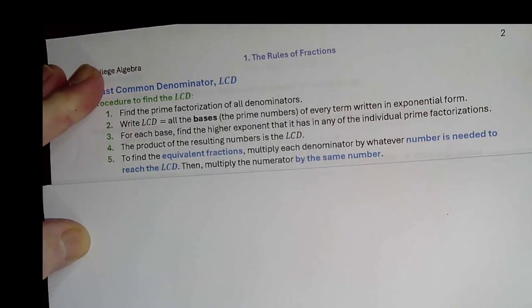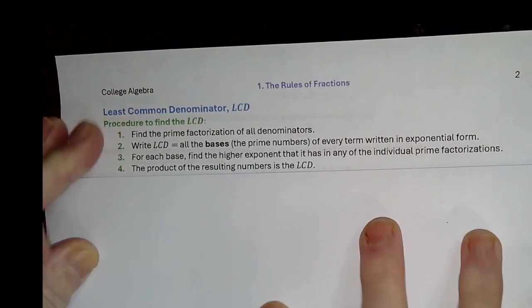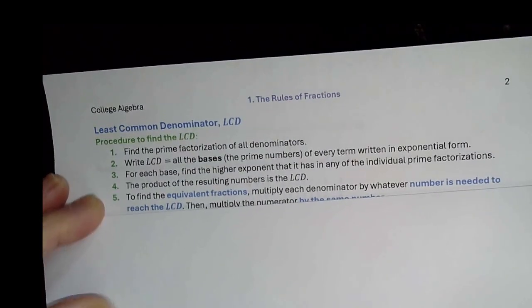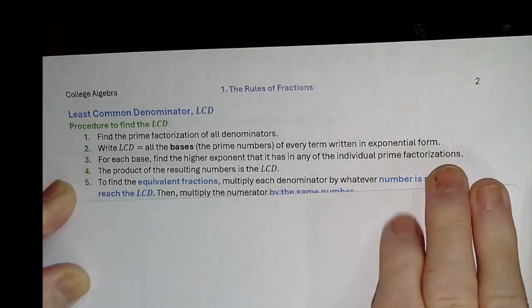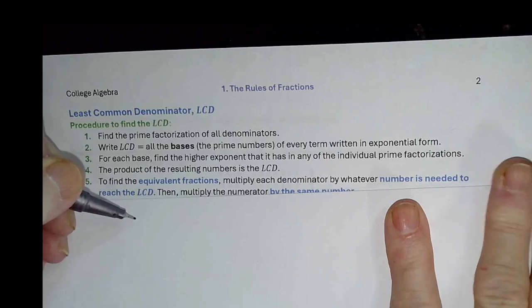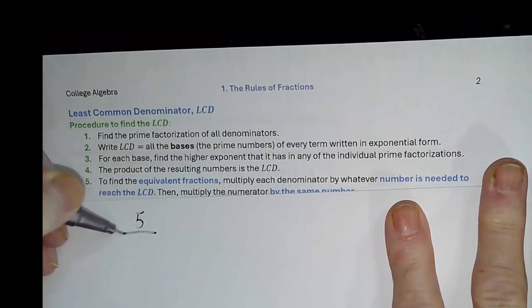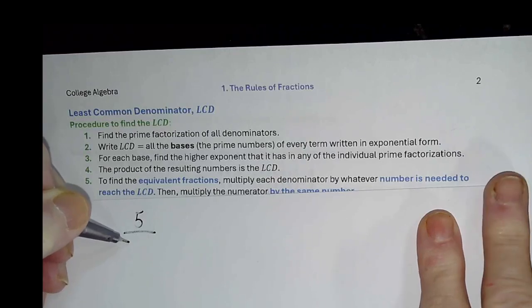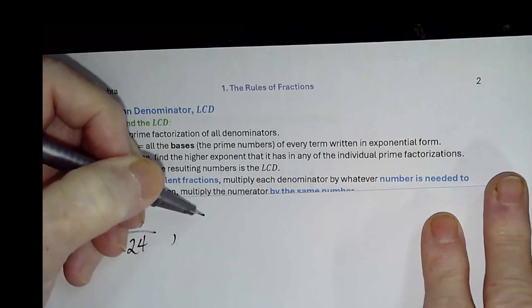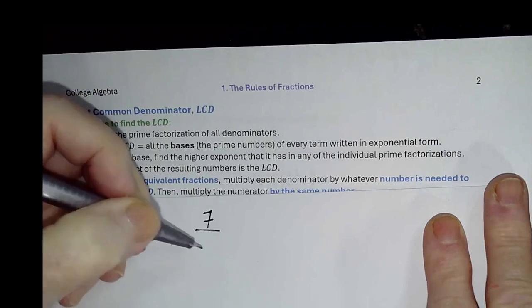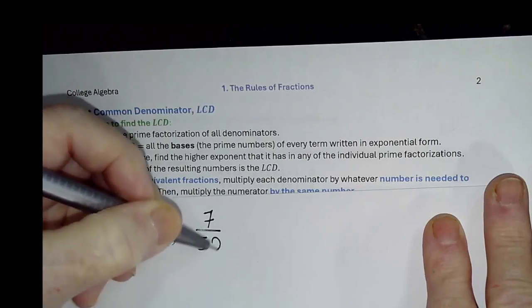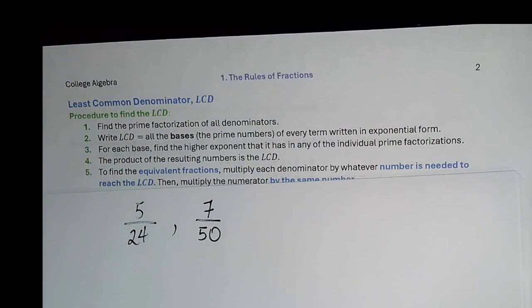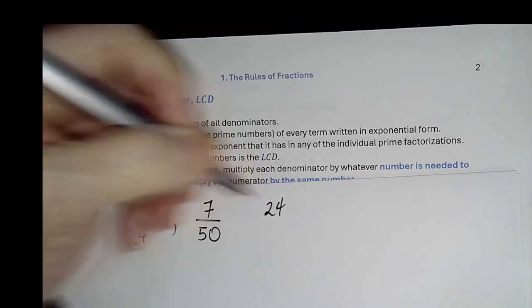And there are five steps, actually four steps to finding the LCD, and then one additional step to finding an equivalent fraction. So let's go through these steps using an example. Let's say we have 5 over 24 and 7 over 50. So the first step is to find the prime factorizations of the denominators. So for us, that's 24 and 50.